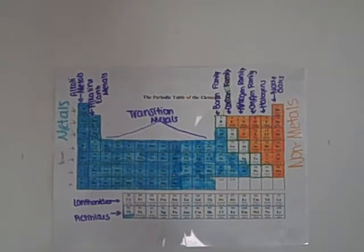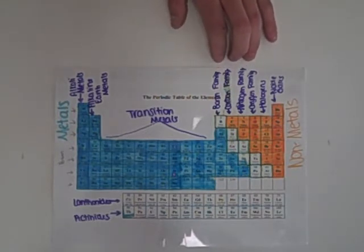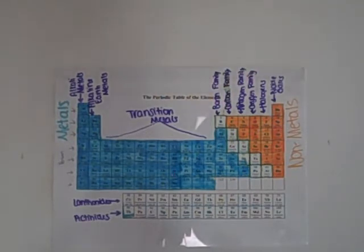Lanthanides and actinides. And these four families are represented by the first element in their group.